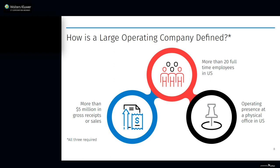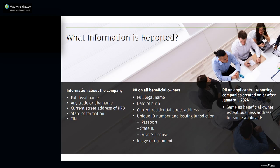There is one exemption I want to discuss in more detail: the large operating company. A large operating company is an entity that (a) employs more than 20 full-time employees in the United States, (b) has an operating presence at a physical office within the United States, and (c) filed a federal income tax or information return in the United States for the previous year demonstrating more than $5 million in gross receipts or sales as reported on IRS Form 1120, Form 1065, or other applicable IRS form, excluding gross receipts or sales from sources outside the United States. So if your company has A, B, and C, it is exempt.